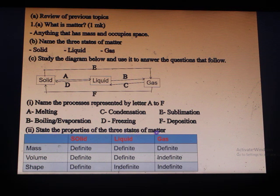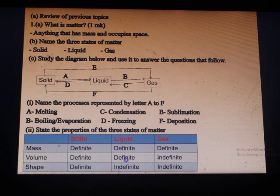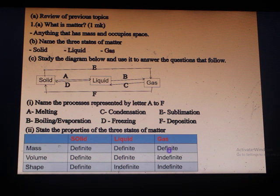State the properties of the three states of matter. Solids have a definite mass, definite volume and definite shape. Liquids have a definite mass and definite volume, but no definite shape — liquids take the shape of the container. Gases have a definite mass but no definite volume and shape.